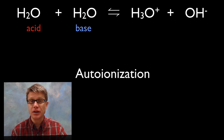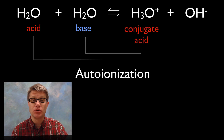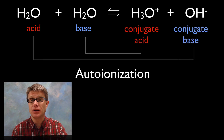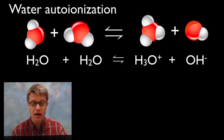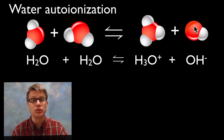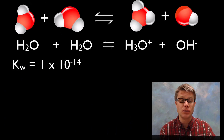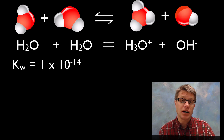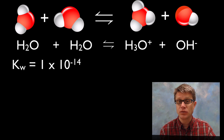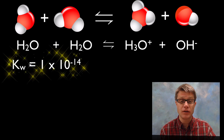What's cool about water is it can auto-ionize — it can serve as both an acid and a base. What we're doing is donating a proton to another water molecule, forming hydronium, while the one that loses the proton becomes hydroxide. We can measure the Kw, the equilibrium constant of water, and it ends up being 1 times 10 to the negative 14th — a really, really small value.